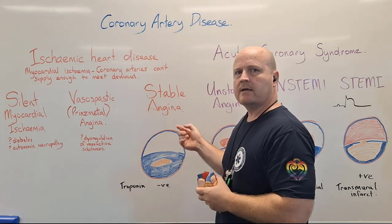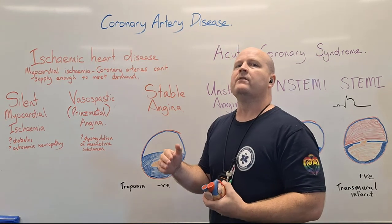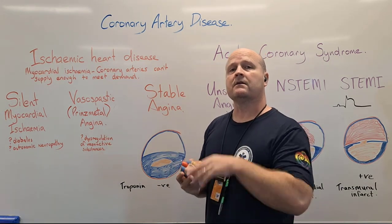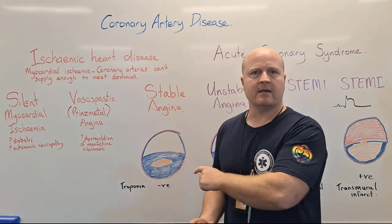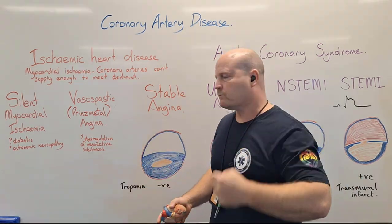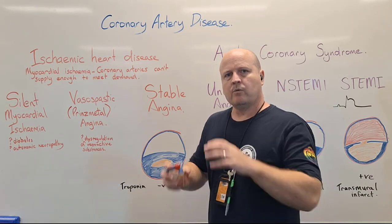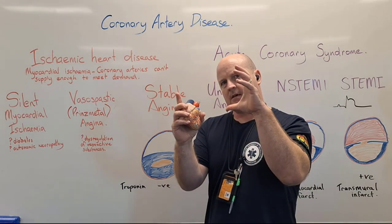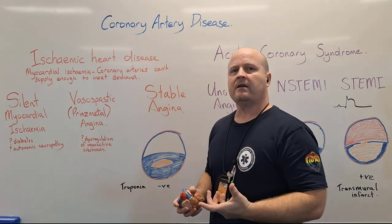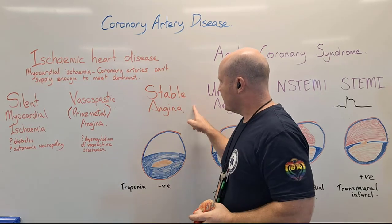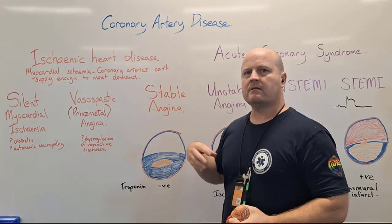When the person rests and stops exercising, the demand decreases until it meets the amount of supply the coronary artery can provide, and the pain subsides. Or they take vasodilators like GTN, which increase the vessel diameter enough to increase supply and relieve the pain. Stable angina involves a stable plaque and the person can predict their pain pattern.